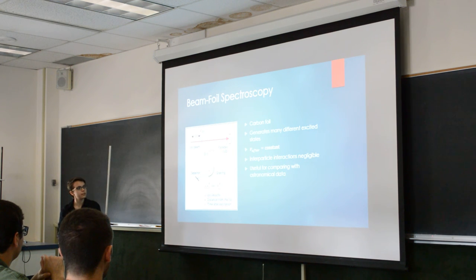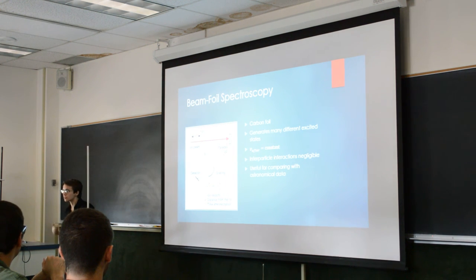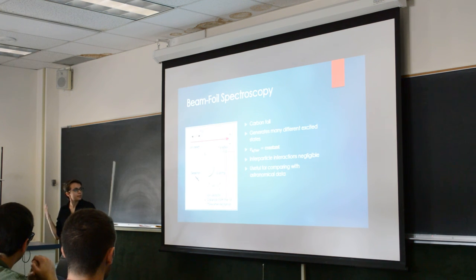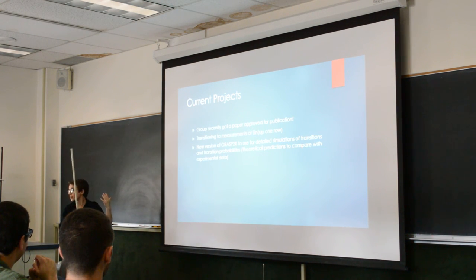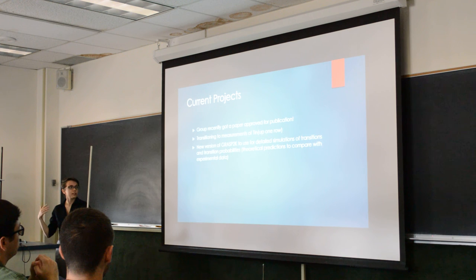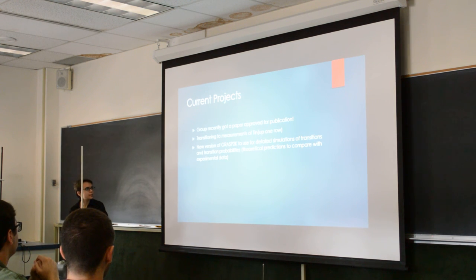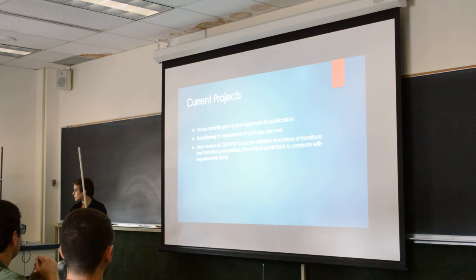These experimental methods are very useful for comparing with astronomical data, which is where most of the data on transition probabilities comes from. That is why we like to look at it in a more constrained laboratory setting and see if the astronomical methods are working. We recently got a paper published on various transitions of lead, which is very nice, and now we're moving on to tin. I will also be using the GRASP 2K software to do transition simulations and find theoretical values for the transition probabilities to compare with the experimental data that we get.